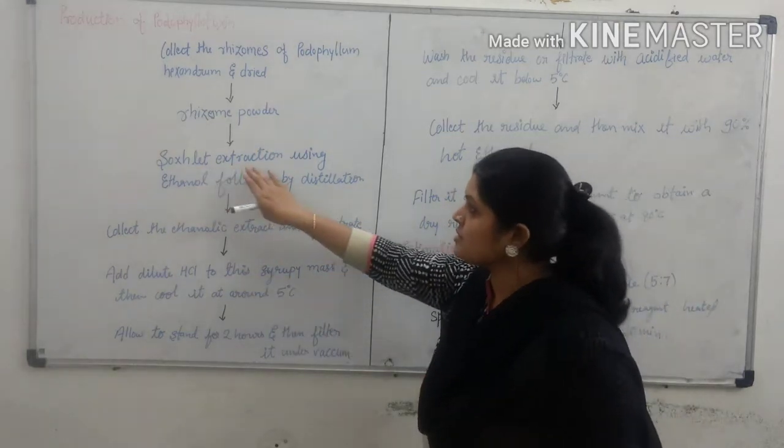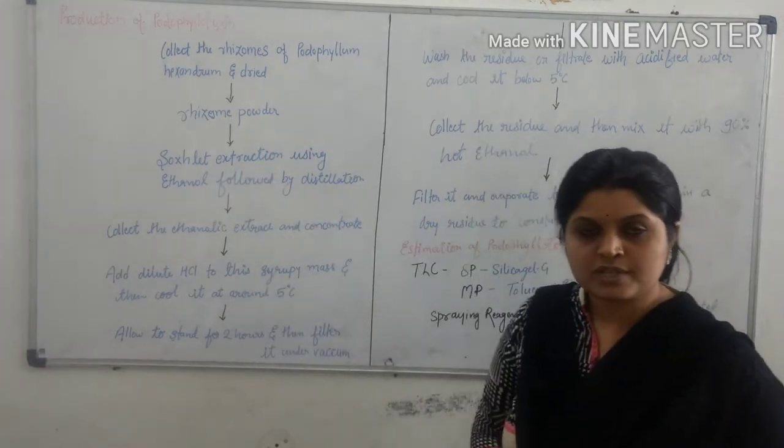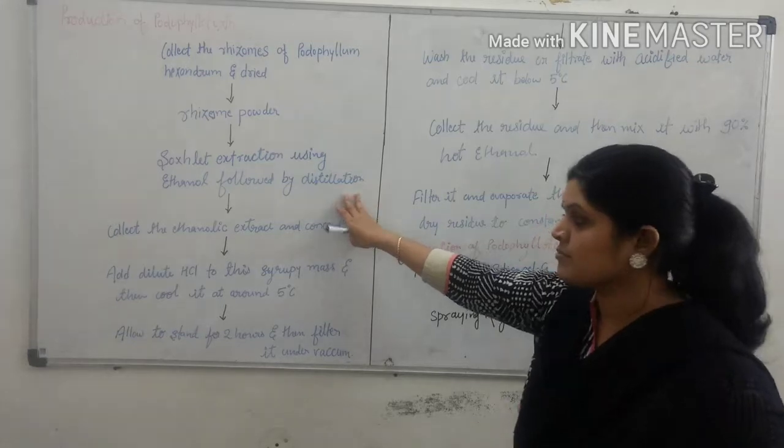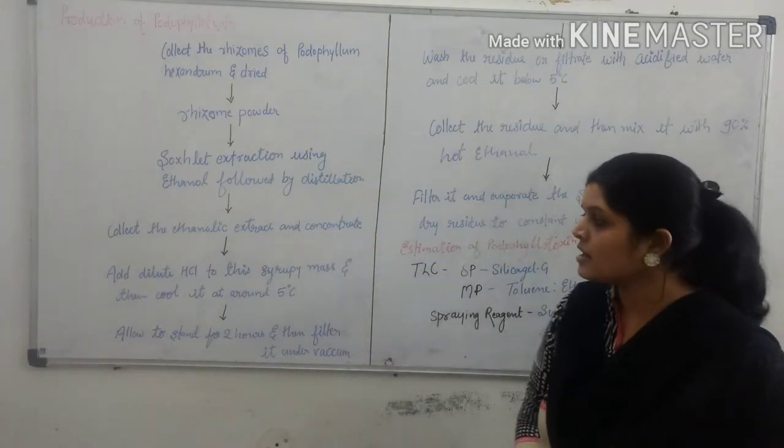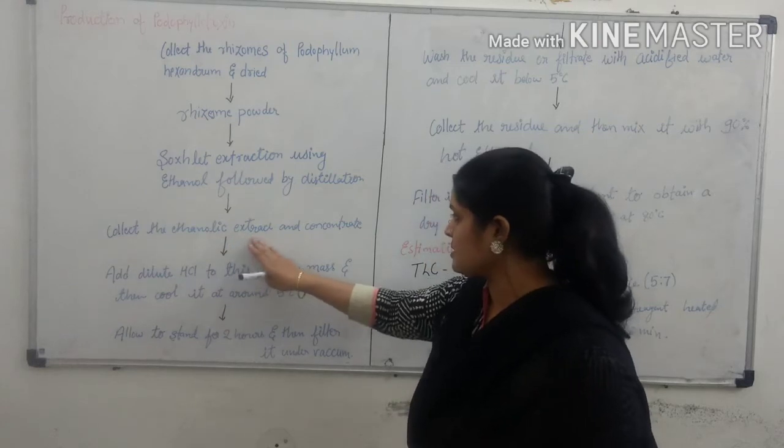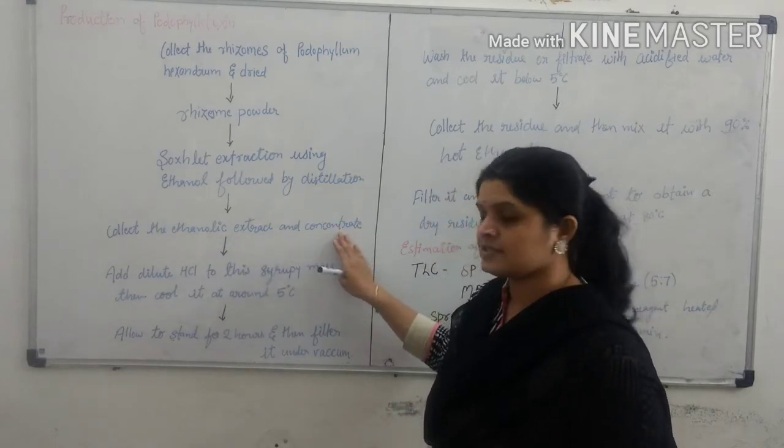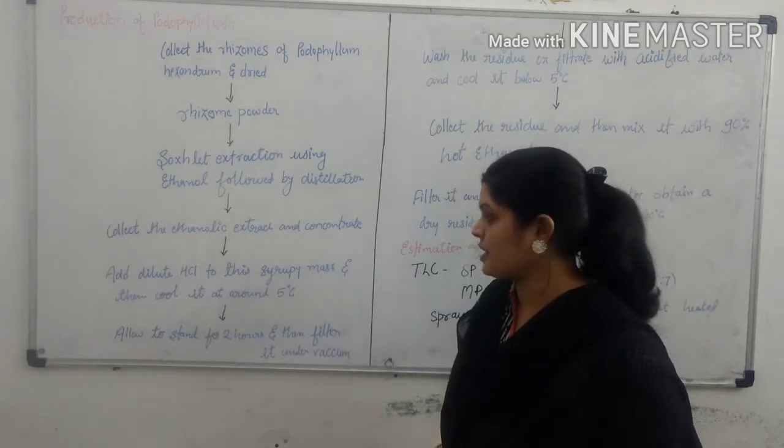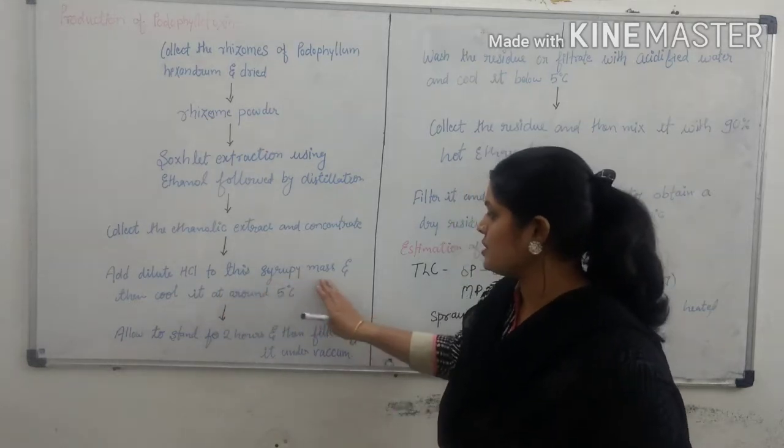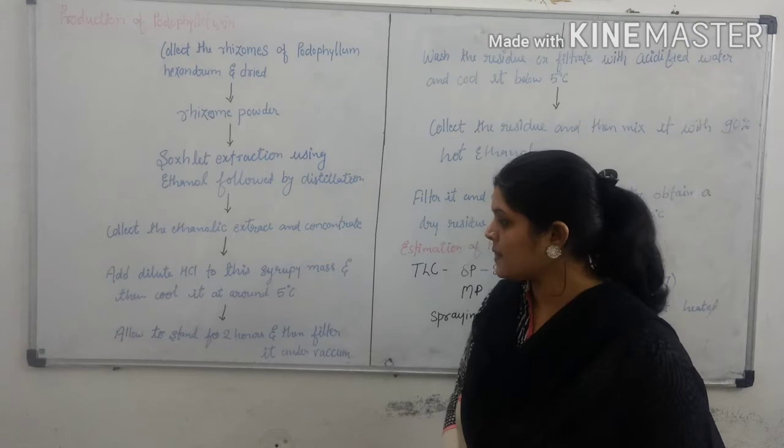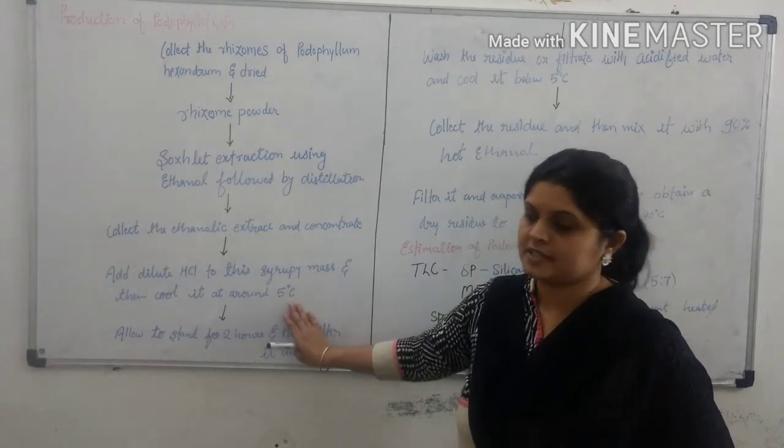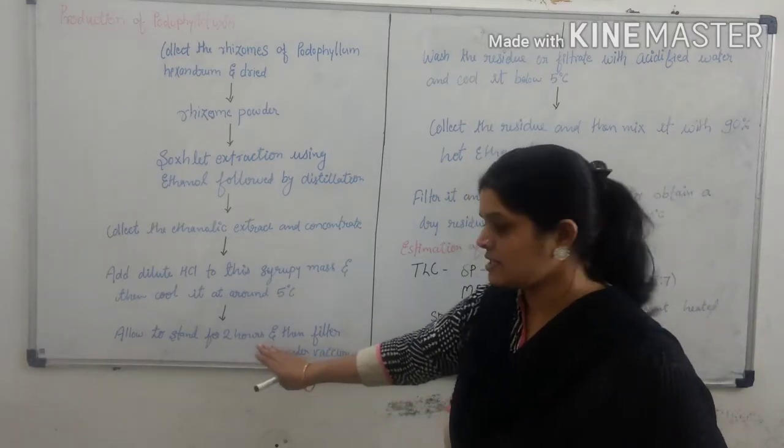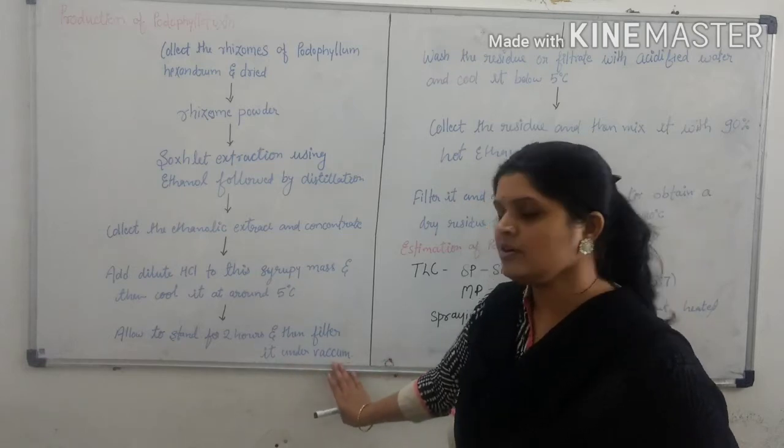This powder drug undergoes extraction process by Soxhlet extraction process using ethanol as a solvent, followed by distillation methods. Collect the ethanol extract and it is concentrated. Add dilute hydrochloric acid to this syrupy mass and then cool it at around 5-30°C. It is allowed to stand for 2 hours and then filter it under vacuum.